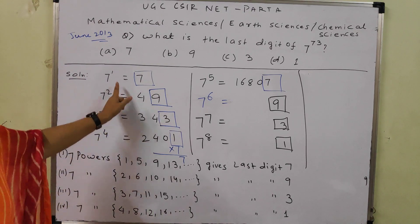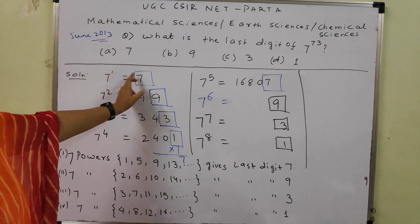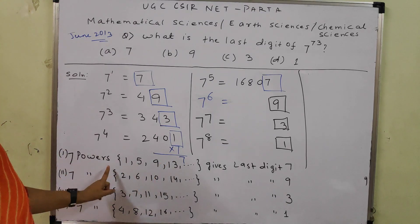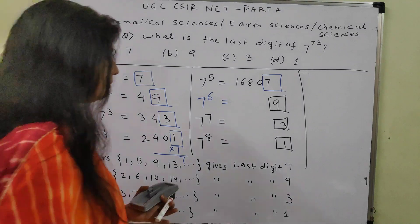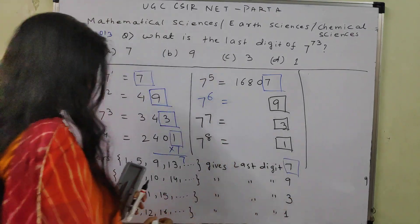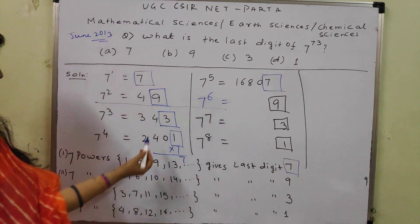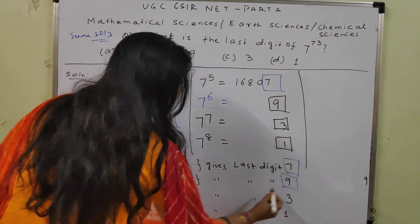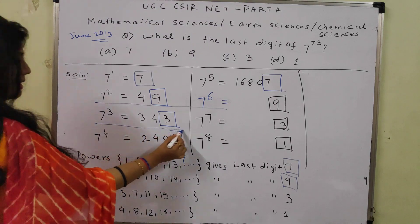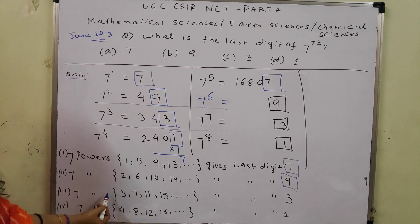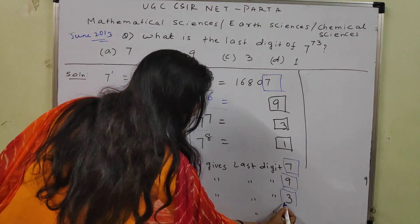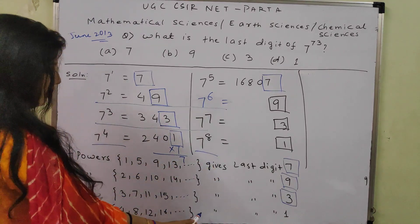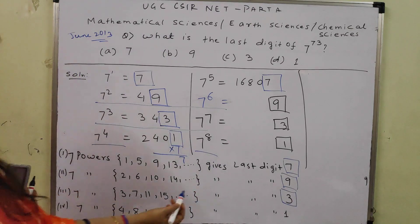Powers whose exponent leaves remainder 1 when divided by 4 — like 1, 5, 9, 13 — give last digit 7. Remainder 2 — like 2, 6, 10, 14 — gives last digit 9. Remainder 3 — like 3, 7, 11, 15 — gives last digit 3. Remainder 0 — like 4, 8, 12, 16 — gives last digit 1.